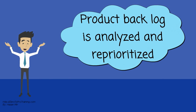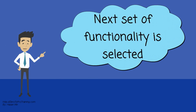Once a Sprint has been delivered, the Product Backlog is analyzed and reprioritized if necessary, and the next set of functionality is selected for the next Sprint.